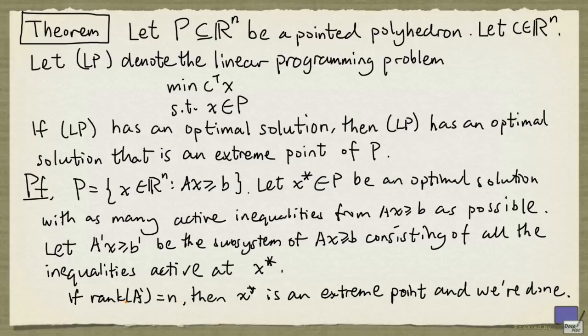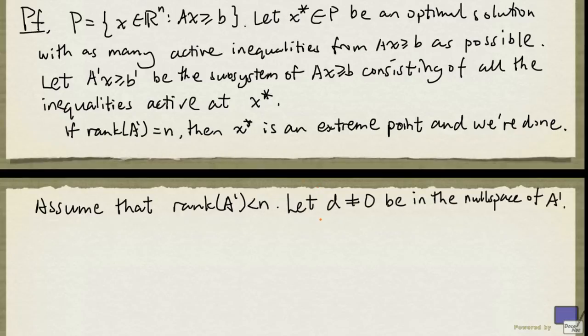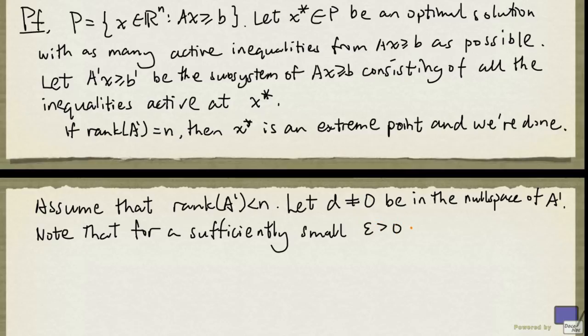So we assume that the rank of A' is less than n. That means that the null space of A' contains a non-zero vector, and we take d to be such a vector. Notice that for a sufficiently small ε > 0, the points x* + εd and x* - εd lie in P.